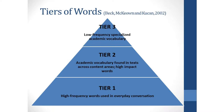Tier two words are the academic vocabulary found in texts across the content areas — those high impact words that we want to spend time on, and words that would be beneficial for students to know at their age and proficiency level, like the word 'responsible.' Tier three words are low frequency, specialized vocabulary of the content areas. They also need to be taught, but within your content area.